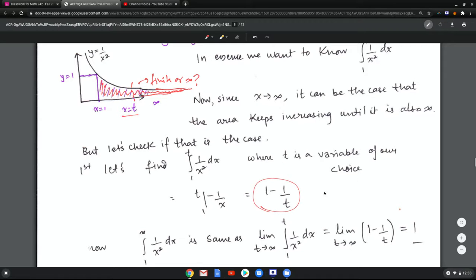So for example, if t is 2 then the area is 1 minus half which is 1 half. If t is 4 then the area is 1 minus 1 fourth which is 3 fourths. And this should make sense because it's 0.5 and then 0.75, so if you are moving t to the right, as t increases the area should increase.